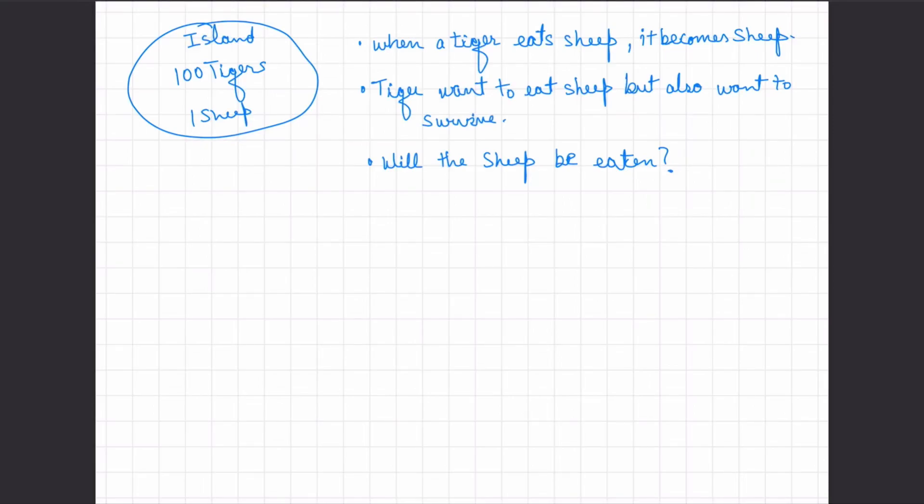Hi everyone, my name is Prakars and today we're going to be talking about another brain teaser puzzle which consists of an island containing 100 tigers and one sheep.